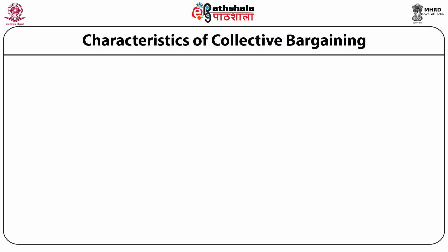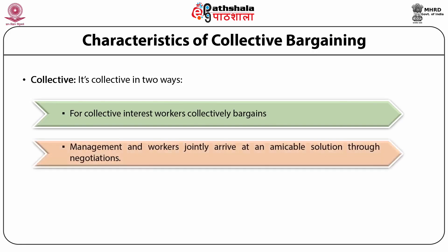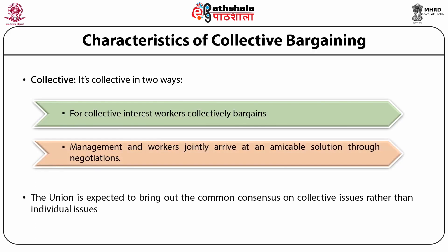Characteristics of Collective Bargaining. First, it is collective in two ways: for collective interest, workers bargain collectively; and second, management and workers jointly arrive at an amicable solution through negotiations. The union is expected to bring out the common consensus on collective issues rather than individual issues.